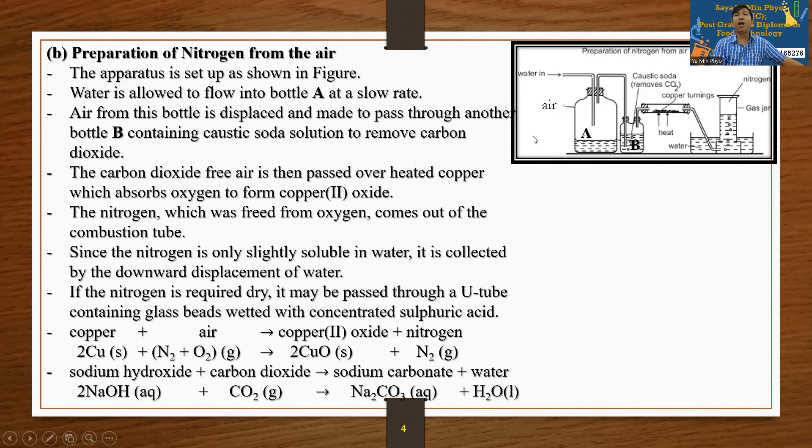The nitrogen, which was freed from oxygen, comes out of the combustion tube. Since the nitrogen is only slightly soluble in water, it is collected by the downward displacement of water. If the nitrogen is required dry, it may be passed through a U-tube containing glass beads wetted with concentrated sulfuric acid.